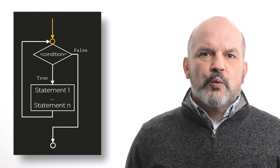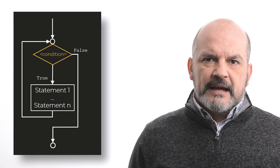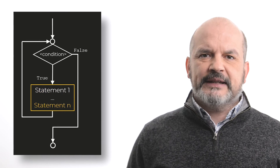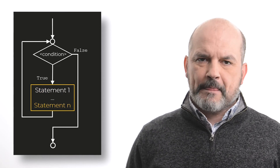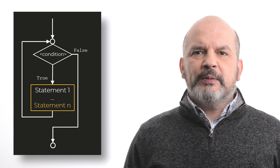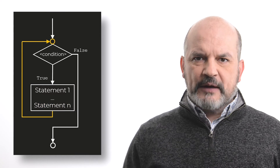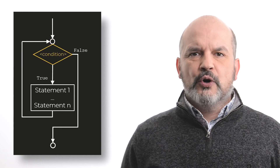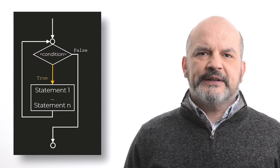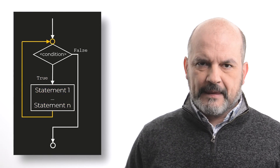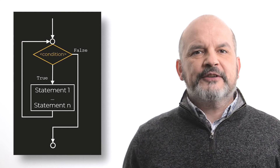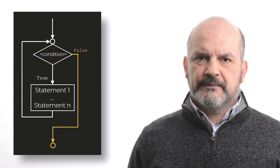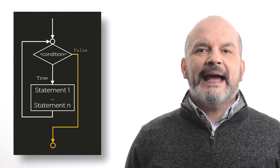When executing the loop, first the condition is evaluated. If it is true, we execute the statements in the body of the loop one by one until all have been executed — completing one iteration — then we go back to the start of the loop and evaluate the condition again. The body of the loop usually contains statements that modify the condition at some point, so that eventually the condition becomes false and the program exits the loop.